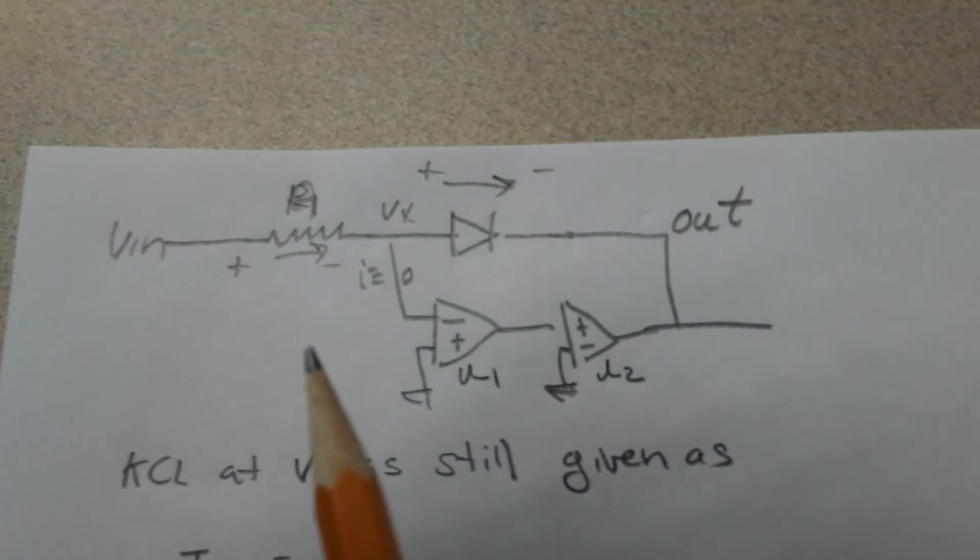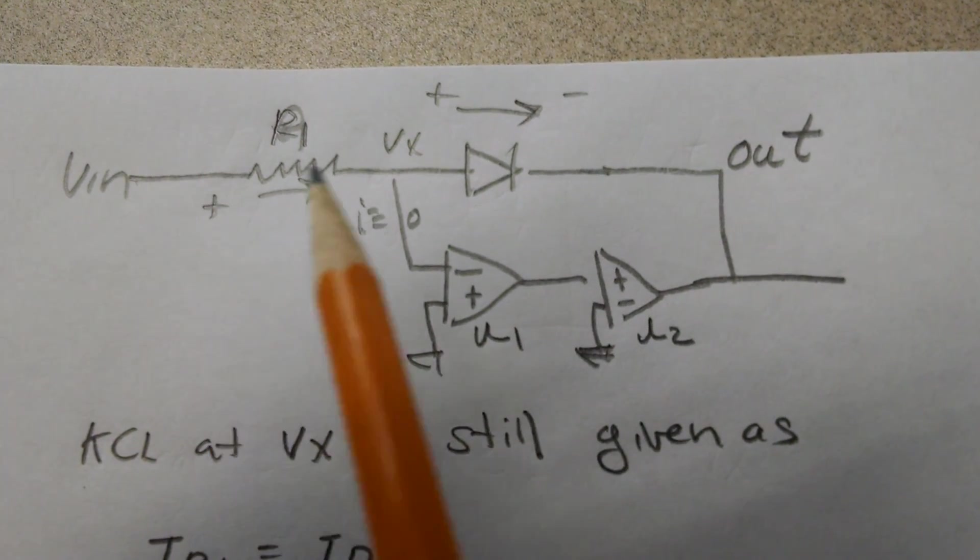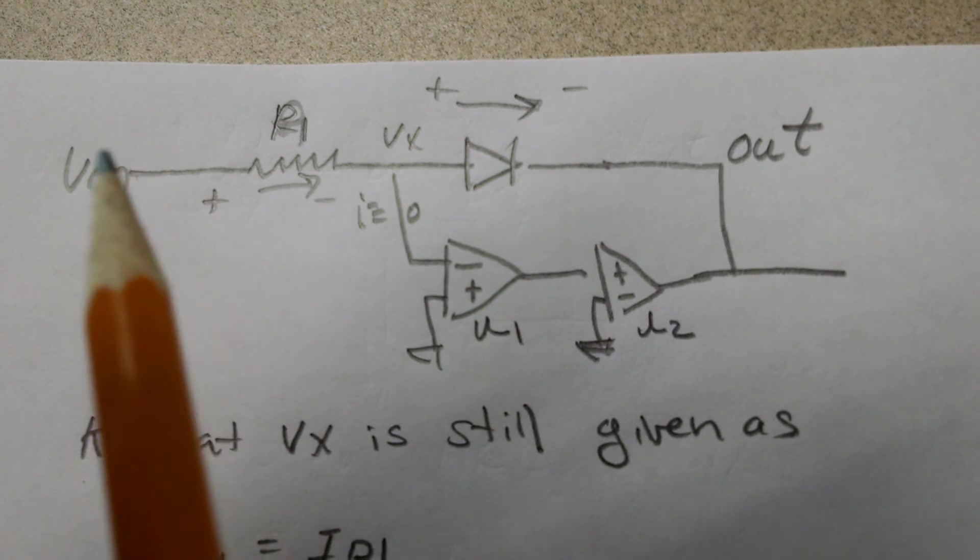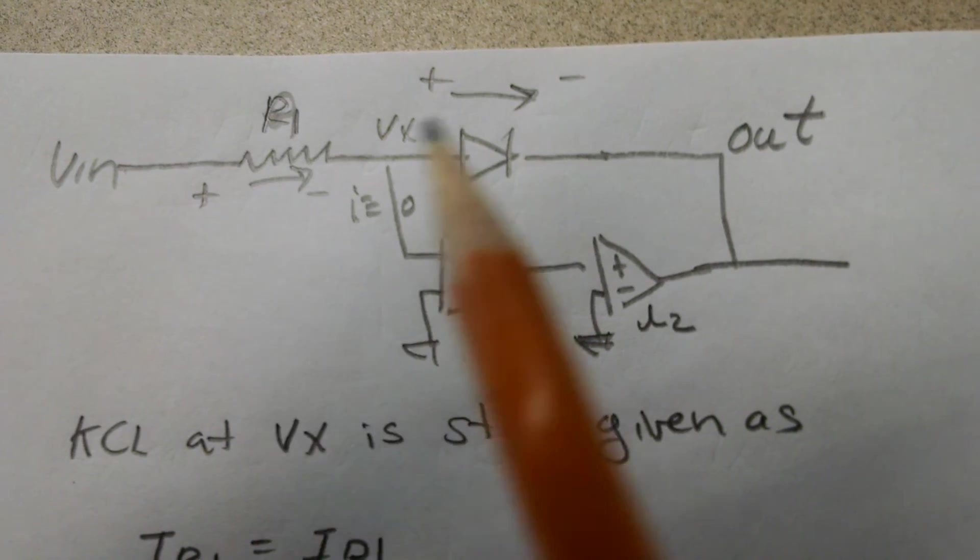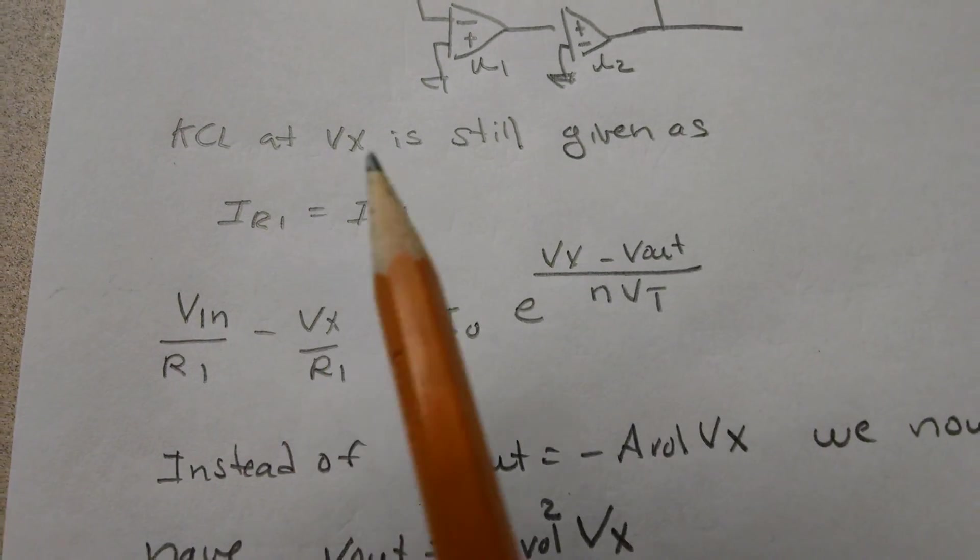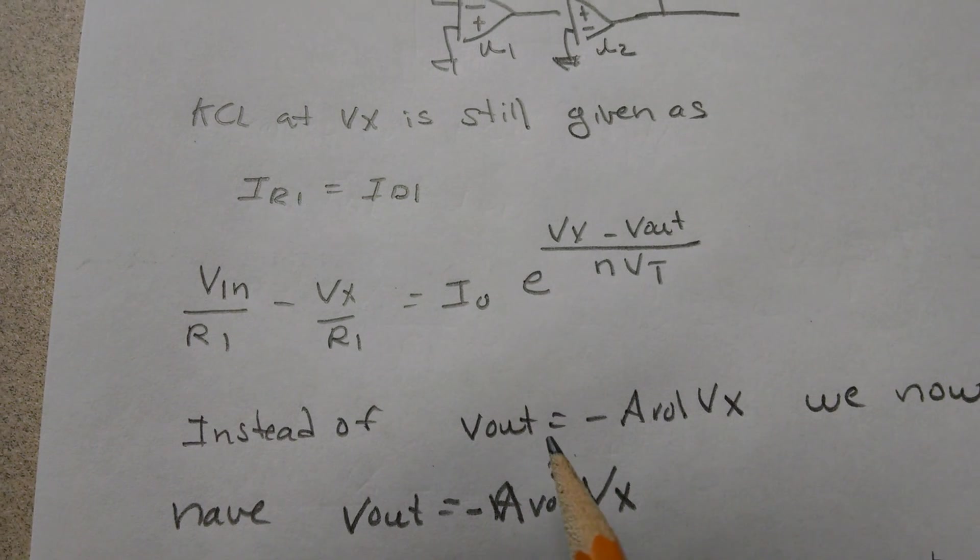Let's try an even fancier circuit where we've chained two op-amps together but we've still got the same logarithmic part. Well, since i here is still zero, our original KCL is still the same.